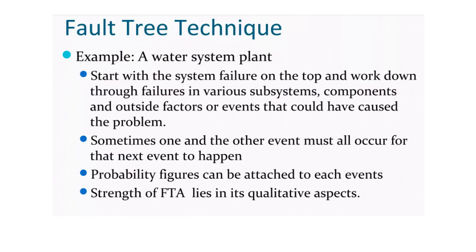Fault Tree Techniques Example — a water system plan. It starts with the system failure on the top and walks down through failures in various subsystems, components, and outside factors or events that could have caused the problem. Sometimes one and other events must all occur for the next event to happen. Probability figures can be attached to each event; the strength of FTA lies in its qualitative aspect.